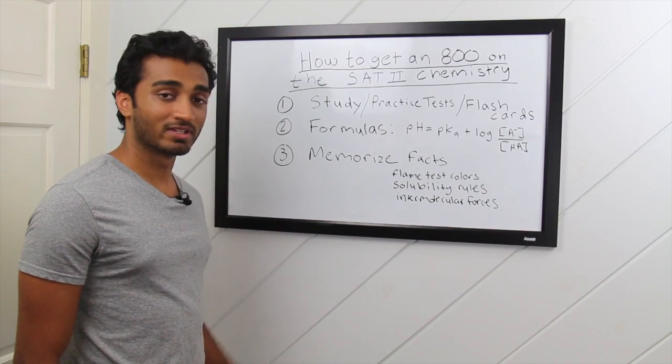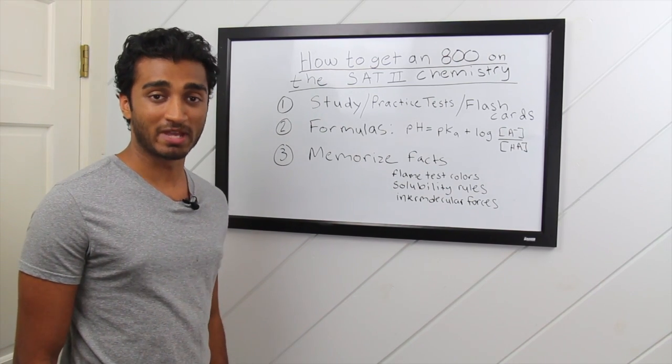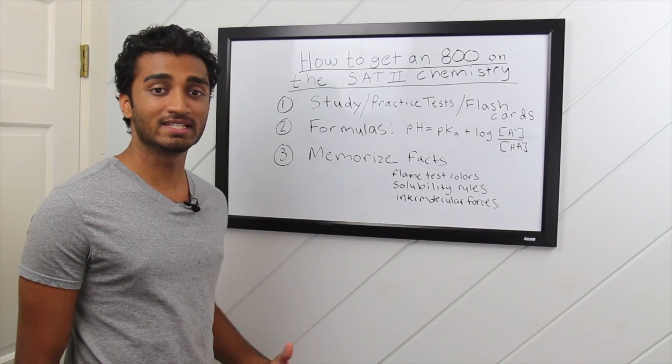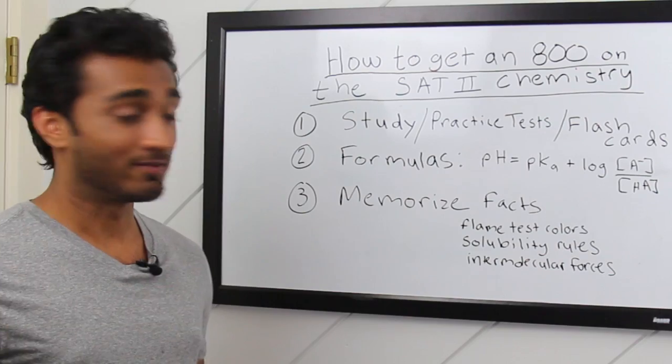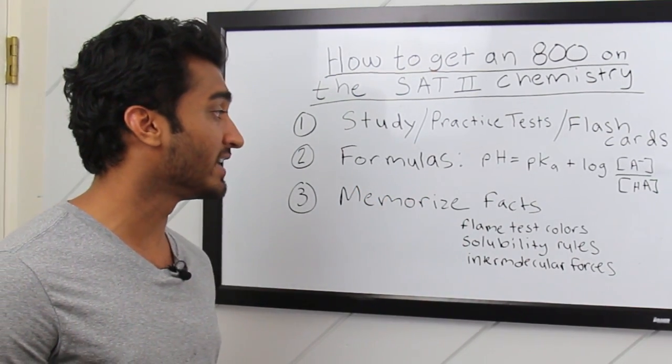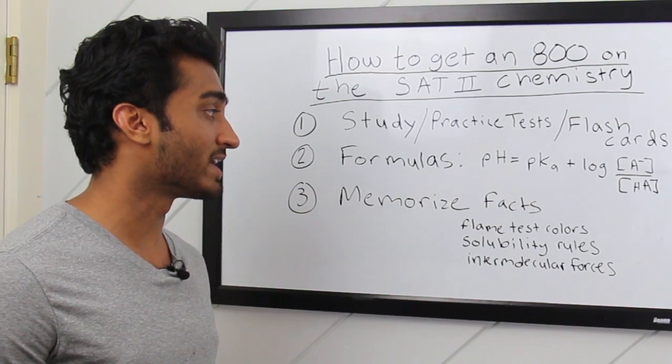Tip number two: formulas. For this tip, you want to get a sheet of paper and write down every formula or equation tested on the SAT II chemistry exam. For example, here I have the Henderson-Hasselbalch equation: pH equals pKa plus log base over acid.